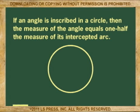If an angle is inscribed in a circle, then the measure of the angle equals one-half the measure of its intercepted arc.